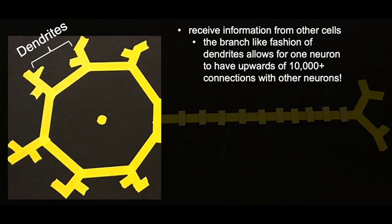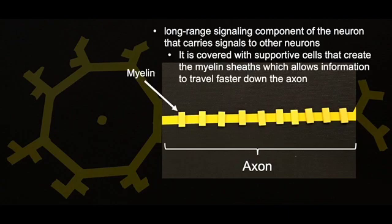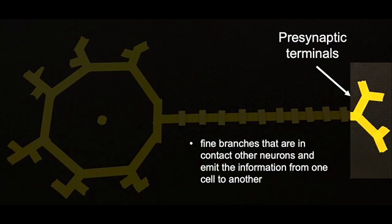The axon is the long-range signaling component of the neuron that carries signals to other cells. It is covered with supportive cells that create the myelin sheets, which allows information to travel faster down the axon. The presynaptic terminals are fine branches that are in contact with other neurons and emit the information from one cell to another.